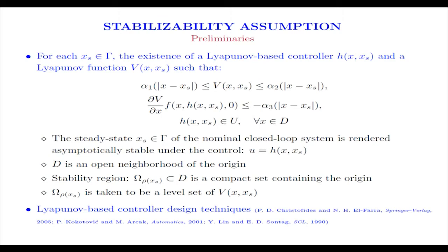We have to impose some stabilizability assumptions on the system. We assume that there exists a Lyapunov-based controller. This is an explicit controller for each one of these points in our set gamma, which is the equilibrium manifold, that renders the closed loop system asymptotically stable under continuous implementation. Applying appropriate converse theorems, this will actually imply that we can find a Lyapunov function for the closed loop system. Since we have each fixed XS in our set gamma, we've parameterized the Lyapunov function with this parameter XS, which is the steady state. For each one of these steady states in our set gamma and each one of the Lyapunov-based controllers, we can characterize the stability region. We call that omega rho XS and can be taken as a level set of the Lyapunov function.